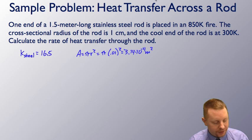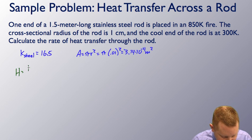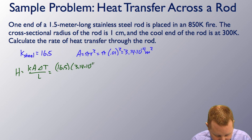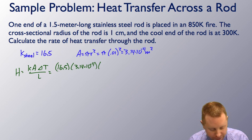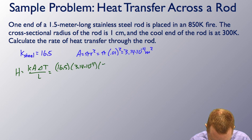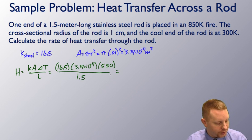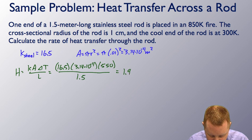Now, we can find the rate of heat transfer. Heat transfer rate is Ka delta T over L, or 16.5 times our cross-sectional area, 3.14 times 10 to the minus 4 square meters. Our temperature gradient, 850 to 300, that's going to be 550 Kelvin divided by the length. The 1.5 meter rod gives us a rate of heat transfer of about 1.9 joules per second, or 1.9 watts.